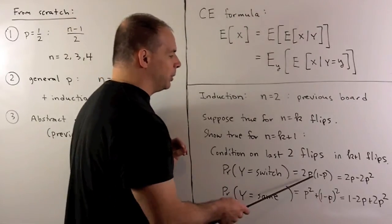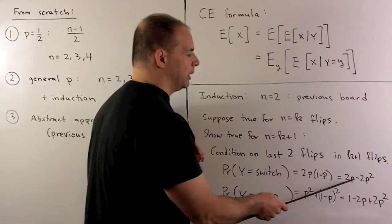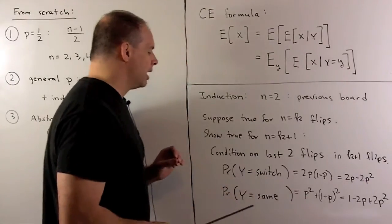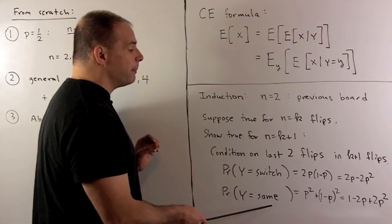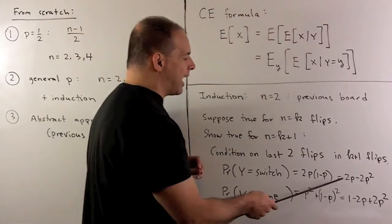the probability is going to be given by 2P, 1 minus P, or 2P minus 2P squared. The probability that those last two are the same is going to be 1 minus what we have when we have a switch.